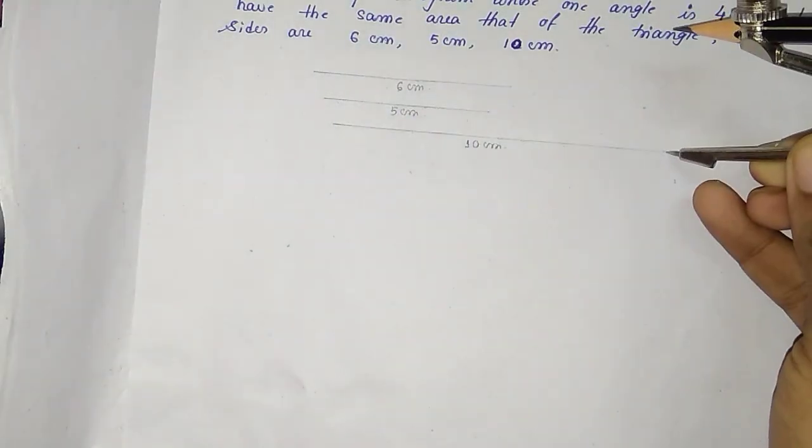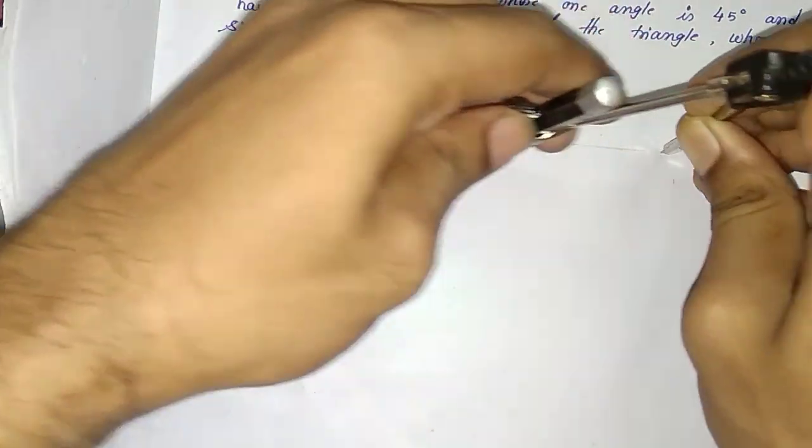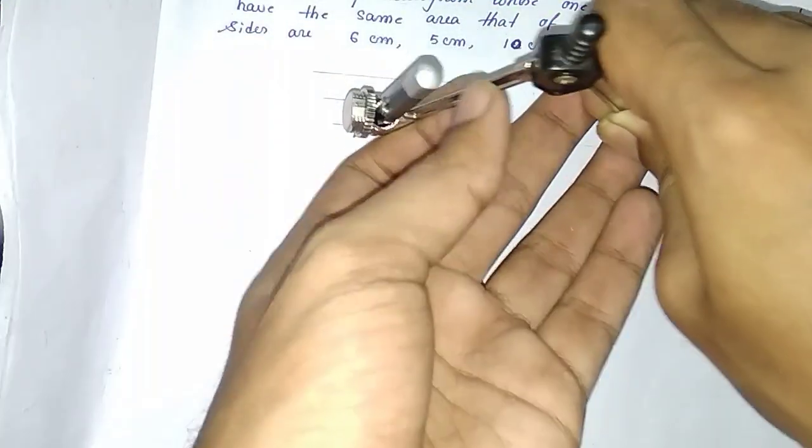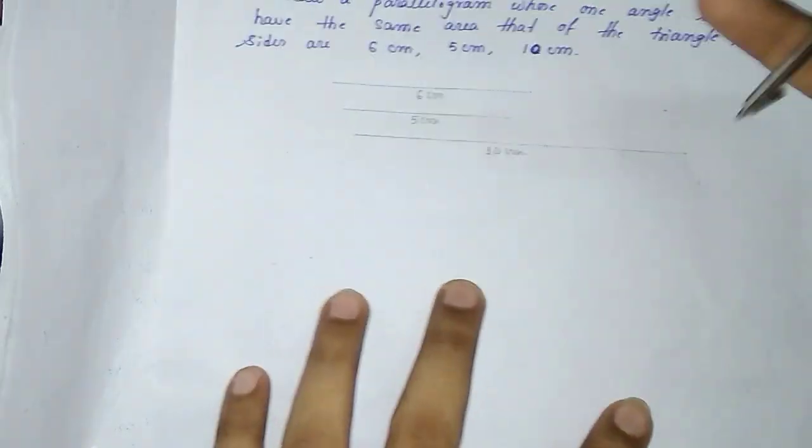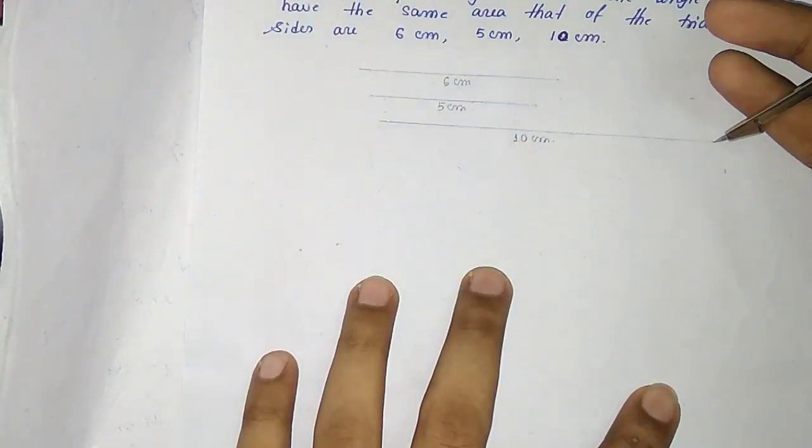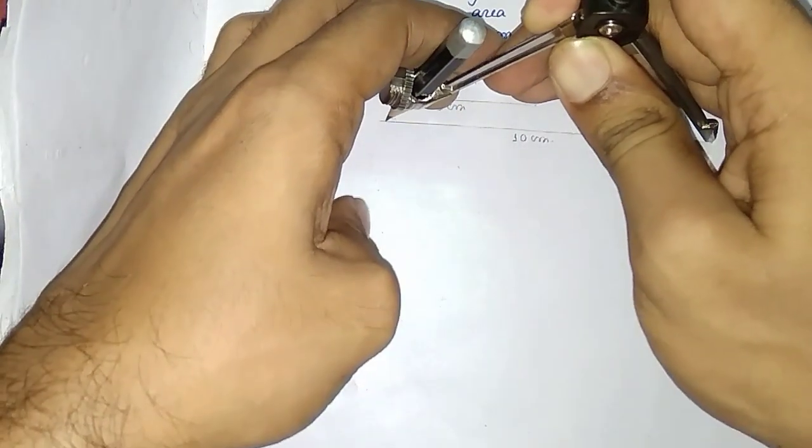I am using the 10-centimeter line, but you can use any of them. Taking the measurements is very important. Now we have to mark it here. Putting the compass on one end, I will take the measurement. Now I am taking the 6-centimeter measurement, you can see it here.